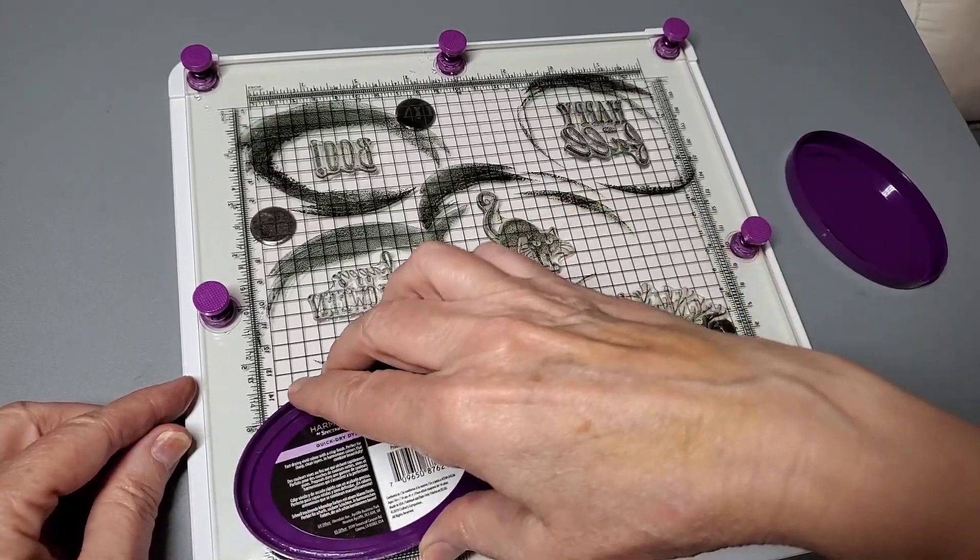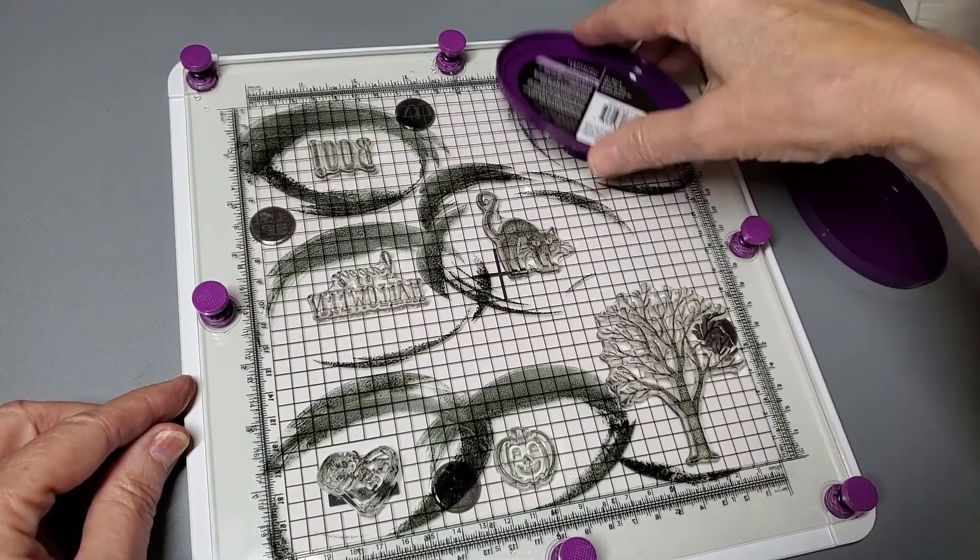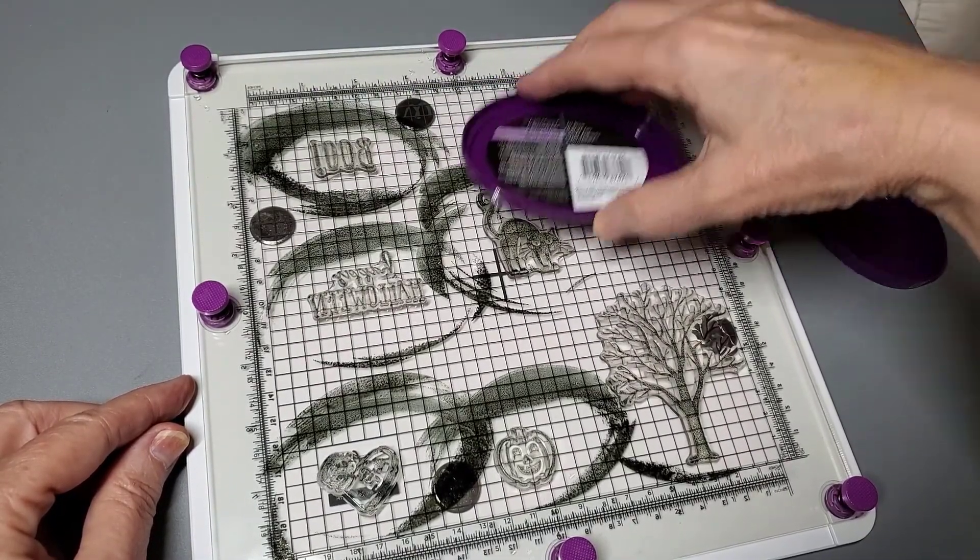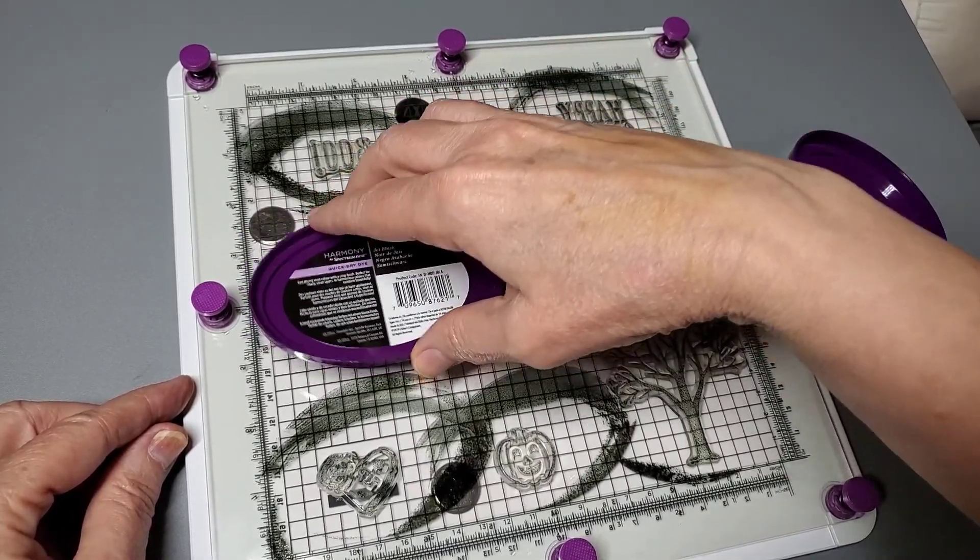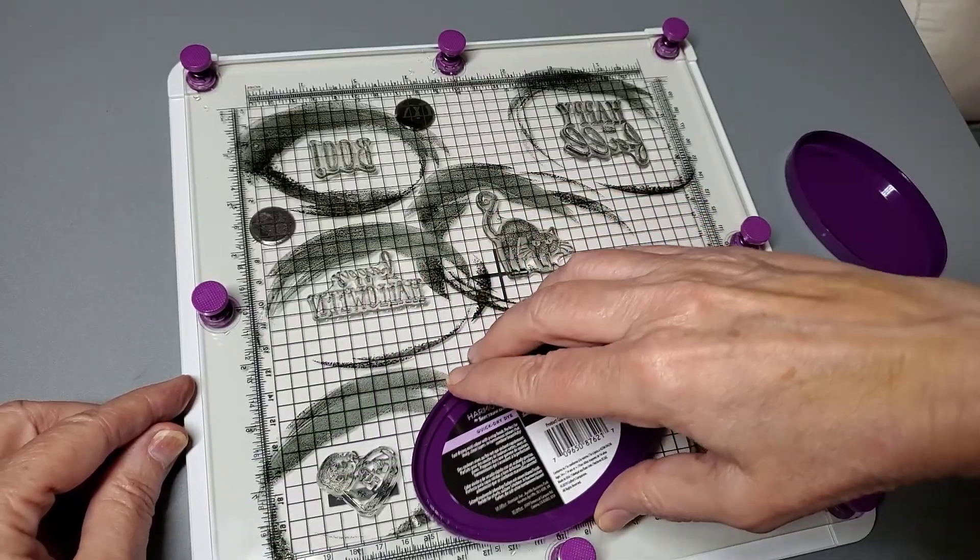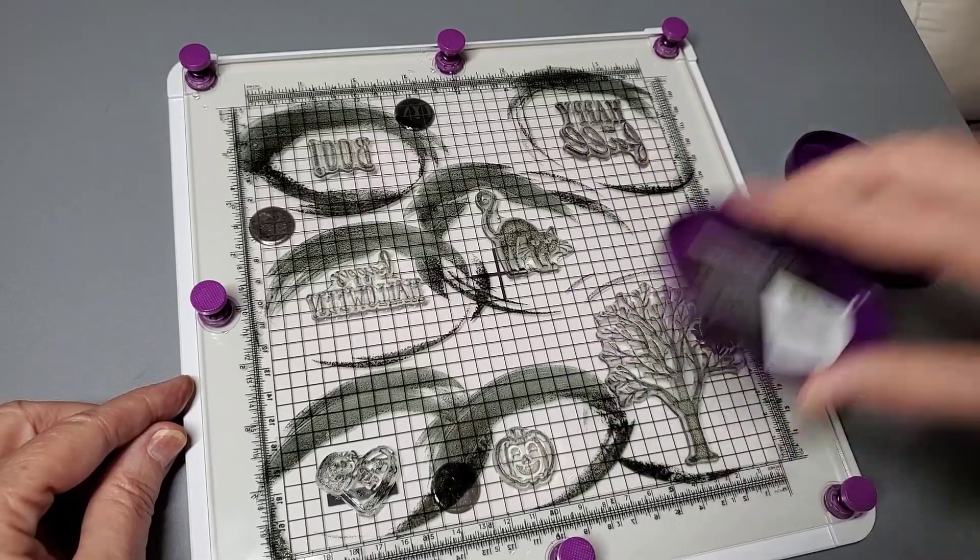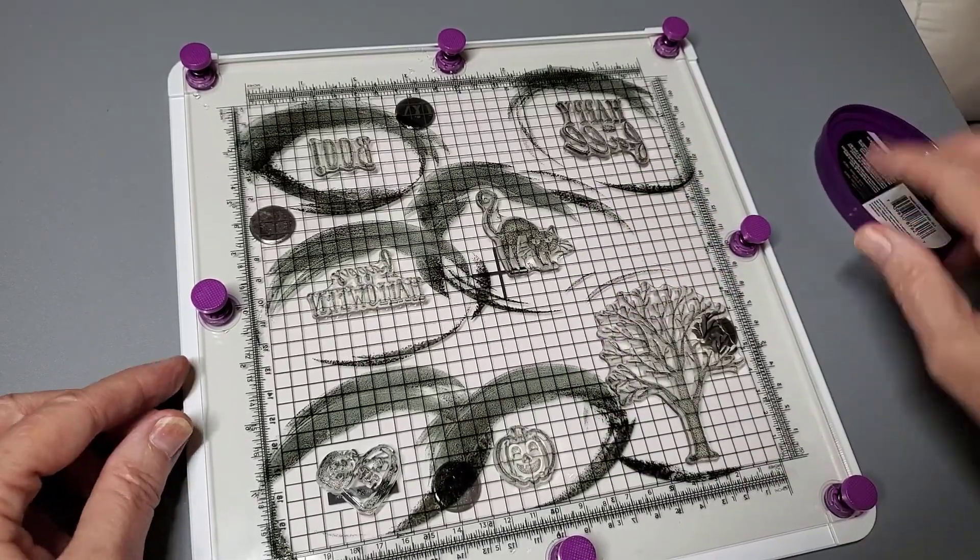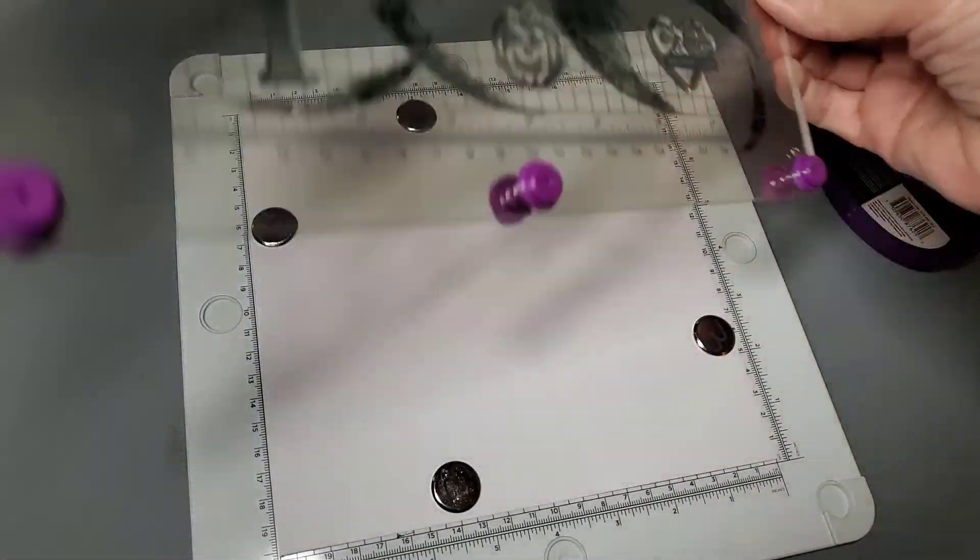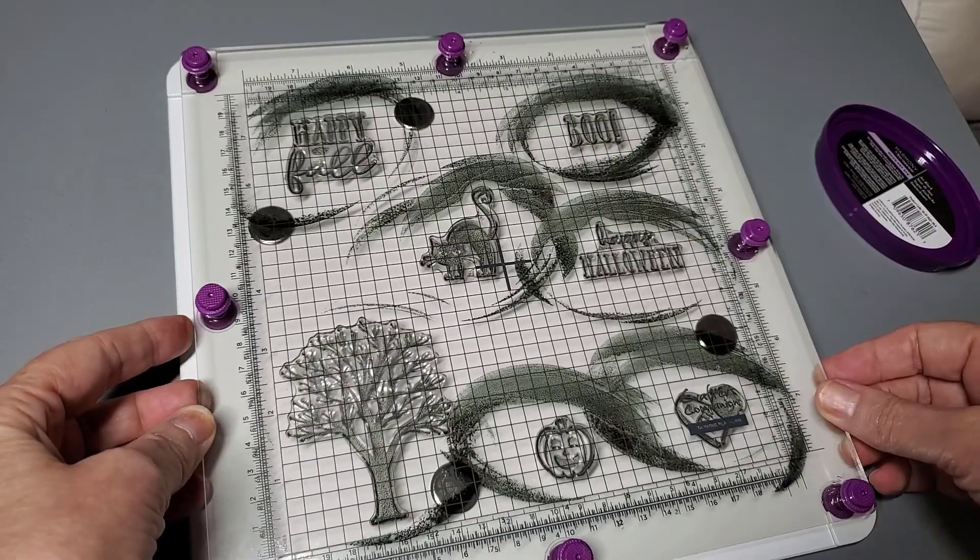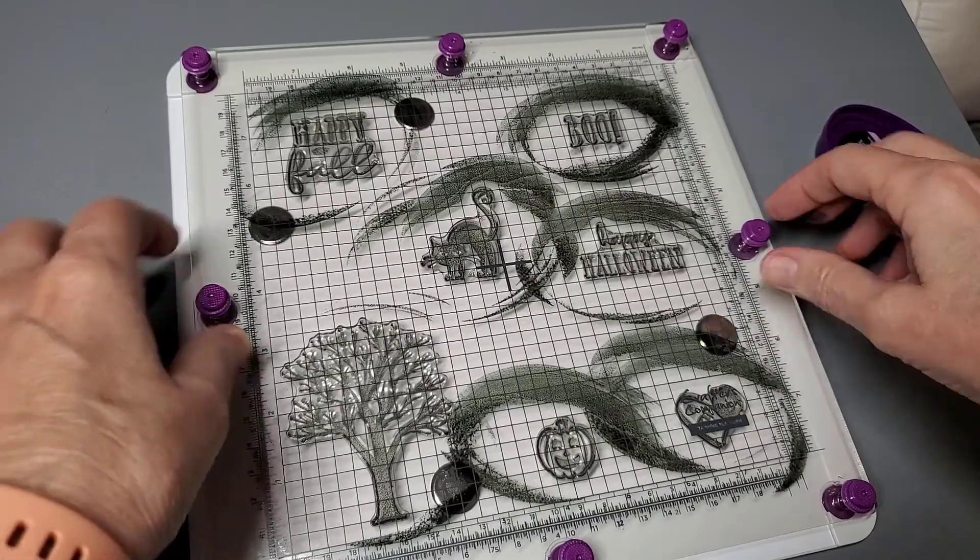When I'm all done, I just take the whole platform right over to my sink and run it under the water. All that ink where I got all over the place just rinses right off, and it rinses off all the stamps at the same time. I just leave it to dry. Let's see if I can do a little bit better job this time. I'm in those little grooves so you can see this doesn't move at all.